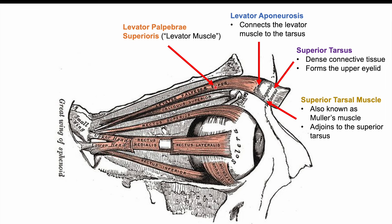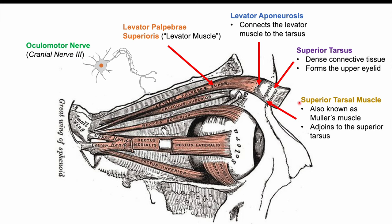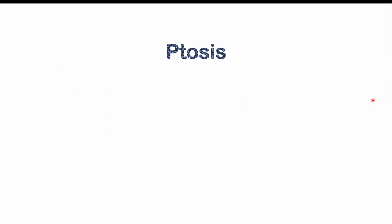The levator palpebrae superioris is a striated muscle innervated by the oculomotor nerve, which is cranial nerve three. The superior tarsal muscle is a smooth muscle under the control of the sympathetic nervous system.